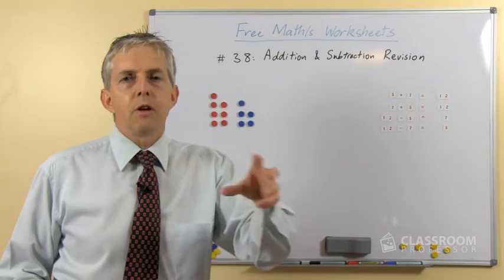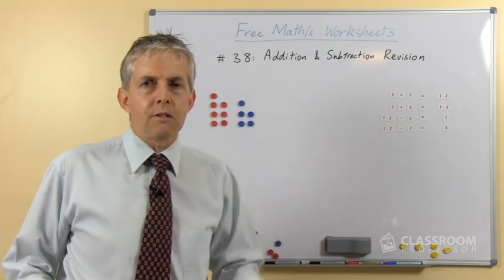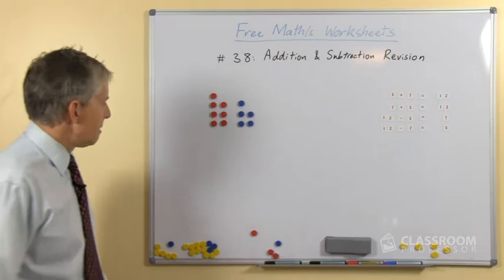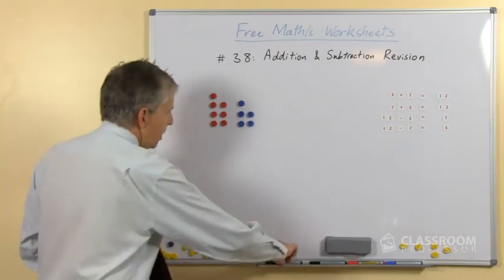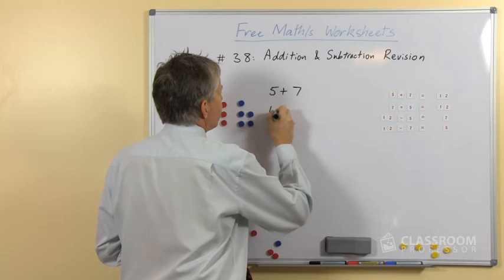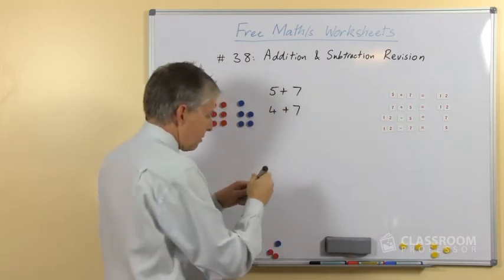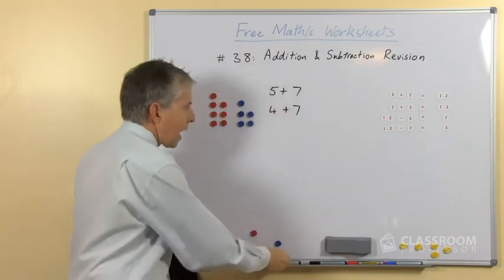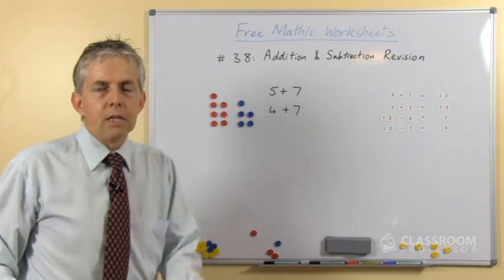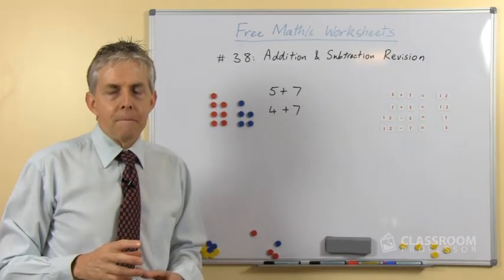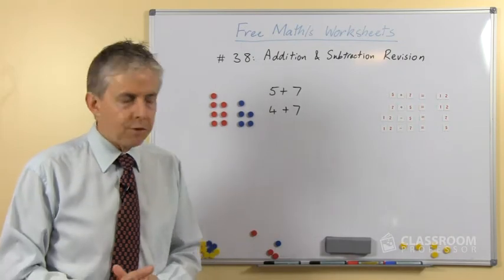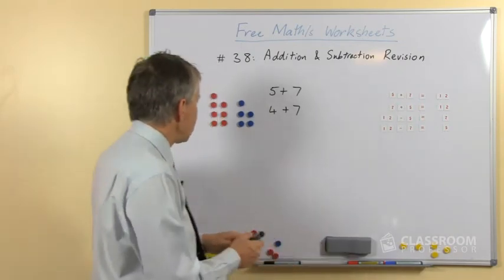If you follow that process, at the end of it there are just two number facts left, which we think is pretty neat. The two facts left are 5 plus 7 and 4 plus 7. Of course they're turnarounds and they're inverses, so if you include subtraction as well, each one of those has a set of four associated number facts.